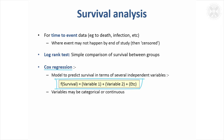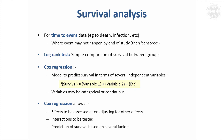The variables going into the model can either be categorical or continuous. So that was really just to say there are types of models suitable for survival data where you can do similar things — by similar things I mean you can adjust for other effects, you can fit interactions, and you can use the model just like we did for the logistic regression example to predict survival based on several factors.